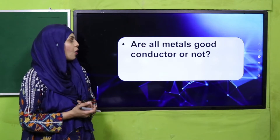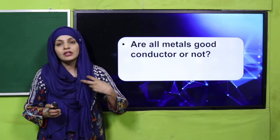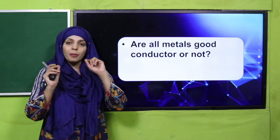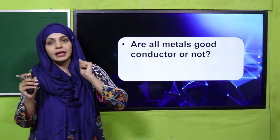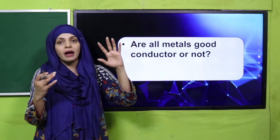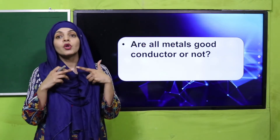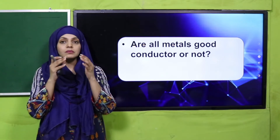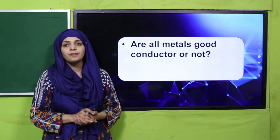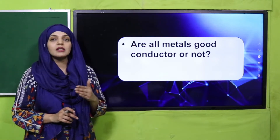Pre-reading question: Are all metals good conductors? From our previous lectures we know metals are good conductors of heat and electricity. You can see copper inside electrical wire — the outside is plastic, which is an insulator, and inside is copper wire, which is a good conductor. But are all metals equally good conductors? No — not all metals are very good conductors of electricity; some are very good conductors and some are bad conductors.